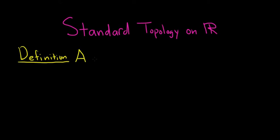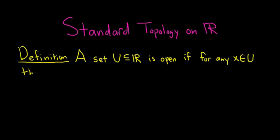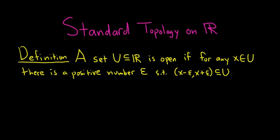We will say a set U, which is contained in the set of real numbers R, is open if for any x in U, there is a positive number epsilon, such that the set x minus epsilon, x plus epsilon, is contained in U. In other words, for any x in U, we can find some epsilon neighborhood around x that's entirely contained in U.